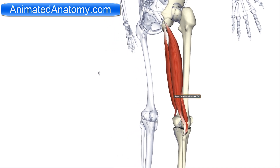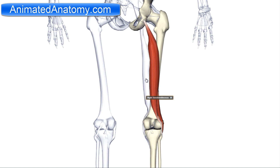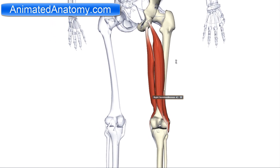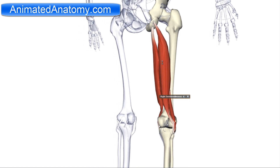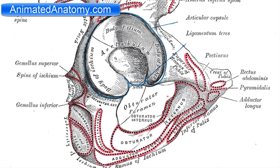Here we have the right semitendinosus muscle. The semitendinosus muscle also has its origin on the ischial tuberosity. If you look at it here, you will see it says biceps and then it says semitendinosus.